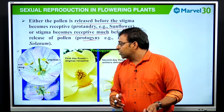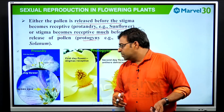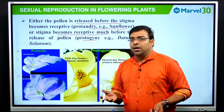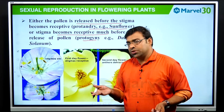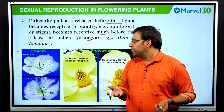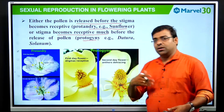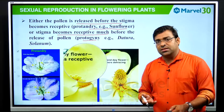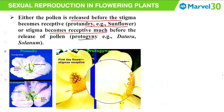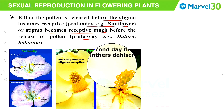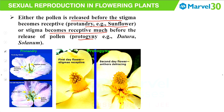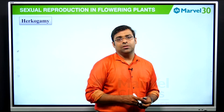Looking at the picture: in protandry, the anthers are shedding pollen while the stigma is closed; then later, the stigma opens while the anthers have already shed pollen — they are not synchronized. In protogyny, on the first day of flowering, the stigma is receptive while the anthers are not yet dehiscing — again, not synchronized. That illustrates both protandry and protogyny.